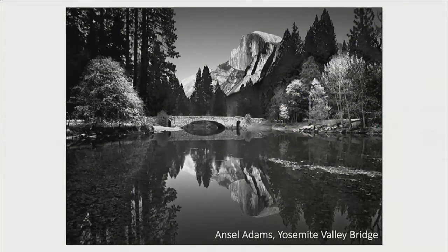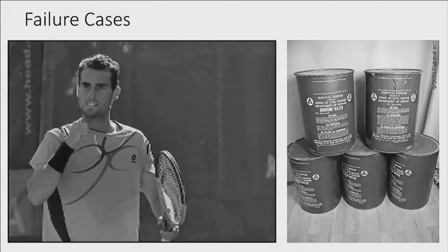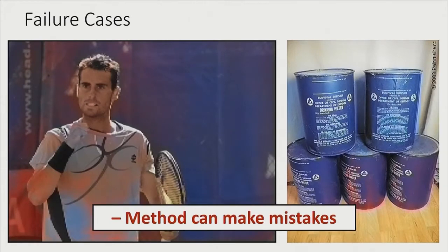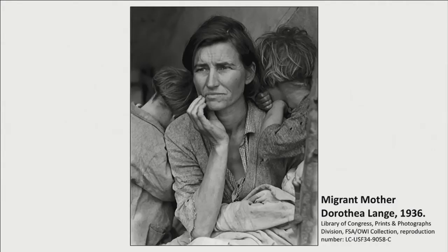Here's one example of colorizing an Ansel Adams photograph using our method. These methods don't always work — in this case we see large spatial inconsistencies. Automatic methods can make mistakes. But there's an even more fundamental issue: while the automatic method can make very reasonable guesses on the mother's skin, when we look at the mother's shirt, it's completely ambiguous.